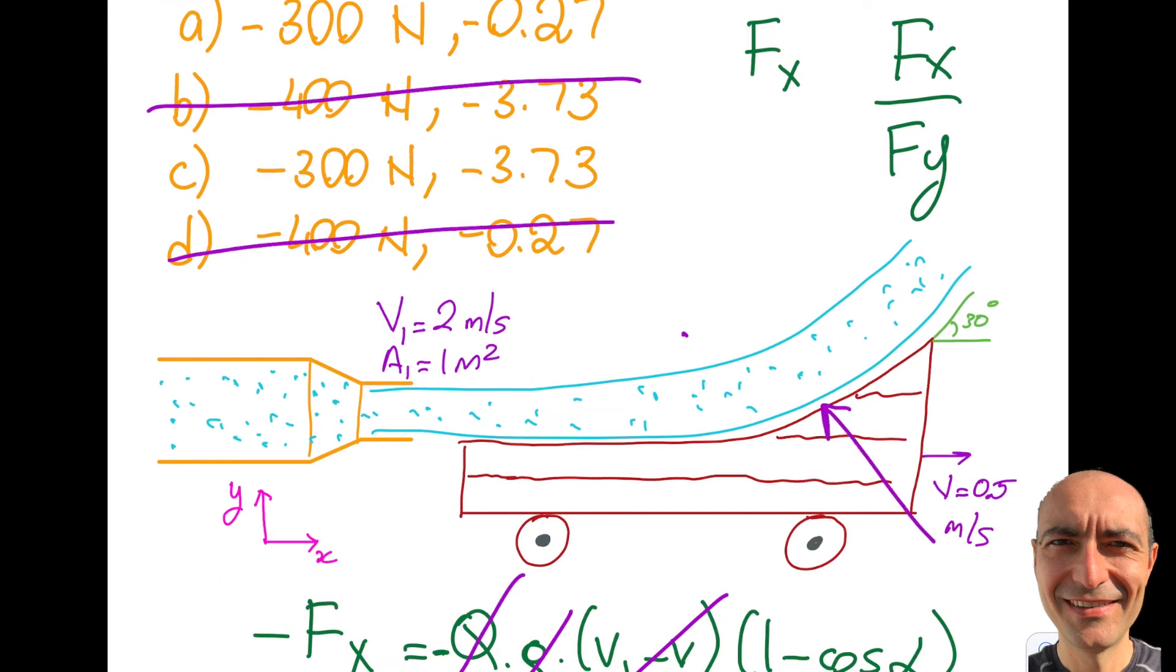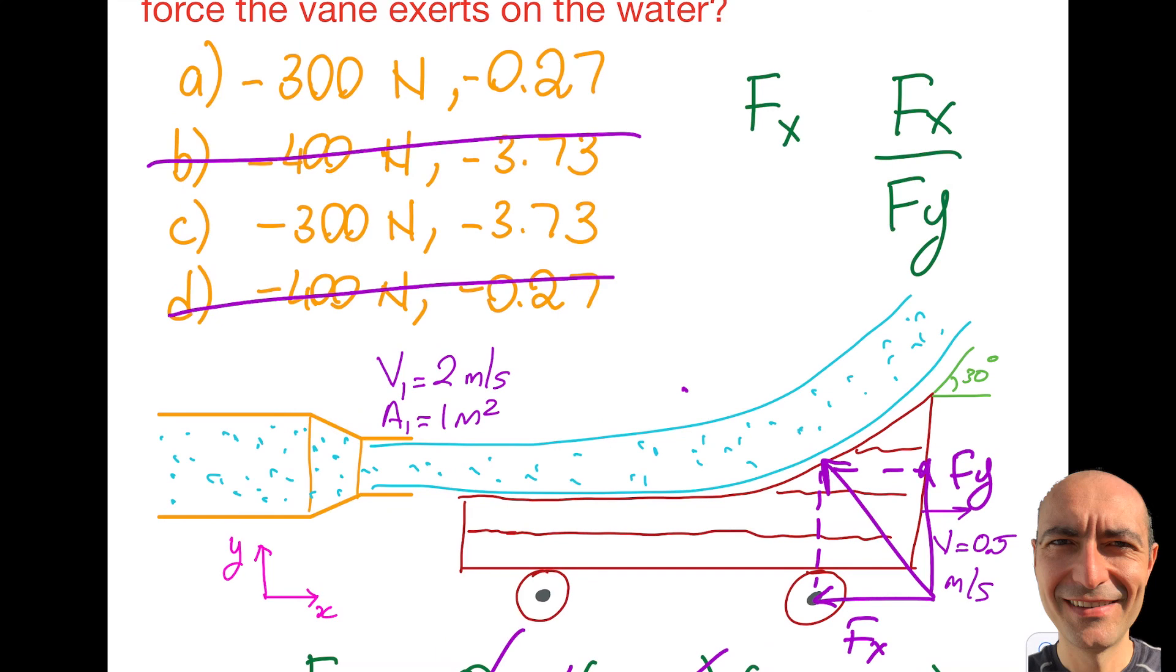If you think about the force components: Fx is aligned with negative x, and Fy is aligned with positive y. That's why we get the negative ratio. So the answer is -0.27. Thank you for watching this segment.